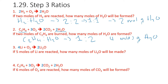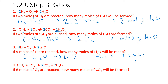Question 3: 4Li plus O2 goes to 2Li2O. We have 5 moles of lithium — how many moles of Li2O have we made? We're looking at lithium to Li2O. The ratio from the equation is 4 in front of Li and 2 in front of Li2O, so we're going to produce half as many moles of lithium oxide as we have of lithium. If we started with 5, we're going to get 2.5 moles of lithium oxide.